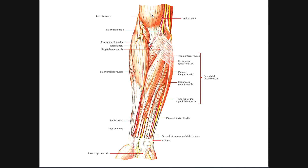Over on the lateral side is the largest of these forearm muscles — this is brachioradialis. Remember that this muscle is going to be innervated by the radial nerve and it's going to participate in elbow flexion. Coming right underneath the bicipital aponeurosis, here's our pronator teres muscle. Pronator teres can assist in elbow flexion, but remember this muscle is mainly for pronation of the radial ulnar joint, or we could say pronation of the forearm.